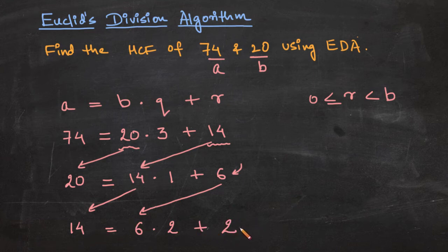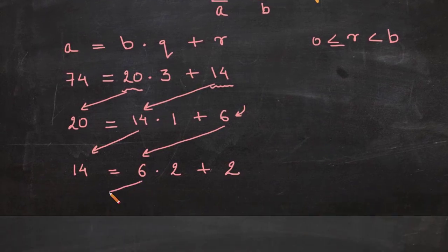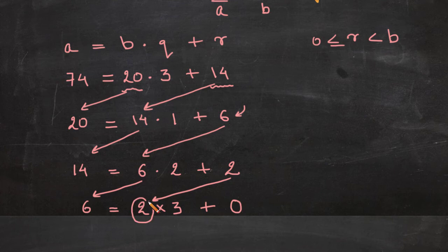Still the remainder is not 0, so we would continue this process. So now this 6 would become our a and this remainder 2 would become our b. So now 2 times 3 would exactly land up at 6 and the remainder here is 0. Now so this 2, the divisor of the last step, would be our HCF of given two numbers 74 and 20.